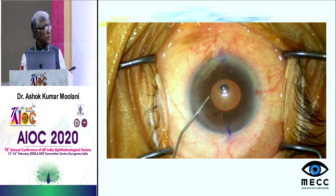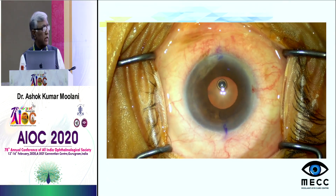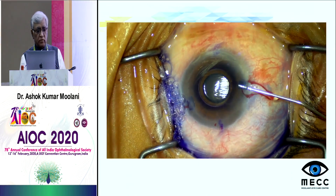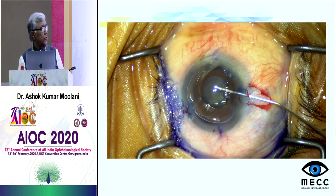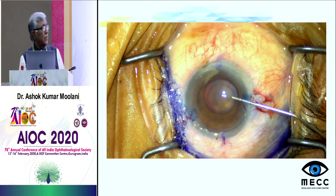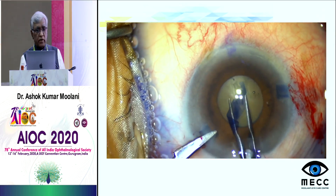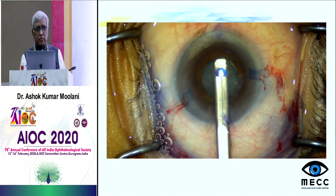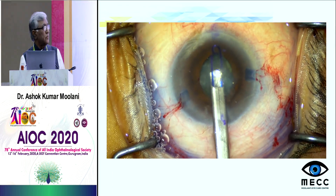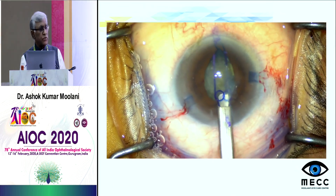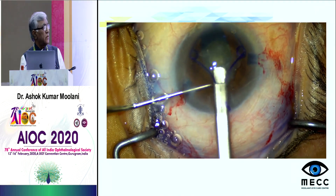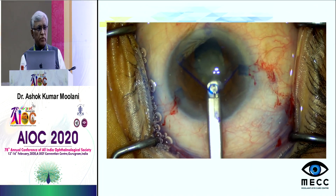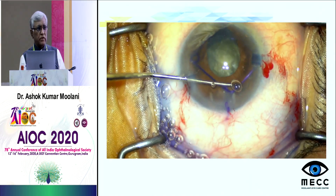Here is another case of small pupil where I tried intracameral mydriatic and viscomydriasis. I stained it with trypan blue, removed it with viscoelastic, then did capsulorhexis along the pupillary margin. In spite of that the pupil was still small, so we used a pupillary expansion ring — the Malyugin ring. Always use the distal scroll first, then put in the lateral and medial scrolls. Also put some viscoelastic between the iris and anterior capsule to create space for the ring.